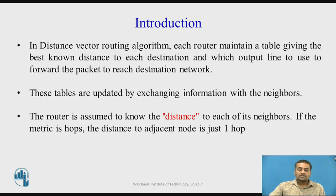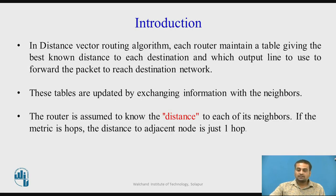The router is assumed to know the distance to each of its neighbors. The distance is a metric. The well-known metric for distance vector routing is number of hops, where the distance to an adjacent node is just one hop. Other metrics are also possible, such as bandwidth, traffic, cost, and communication cost, but generally for distance vector routing the metric used is hops.